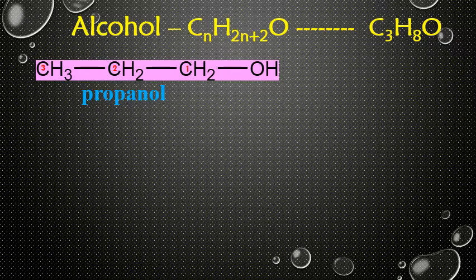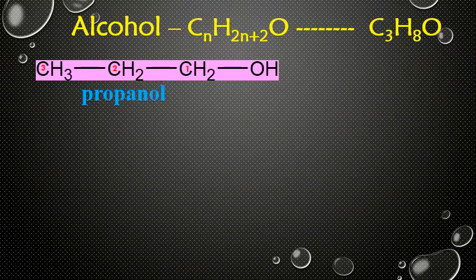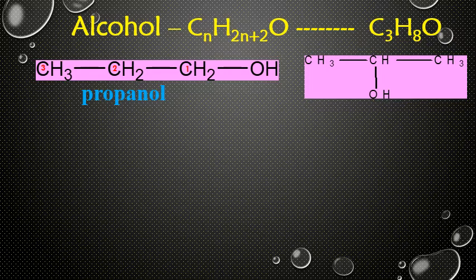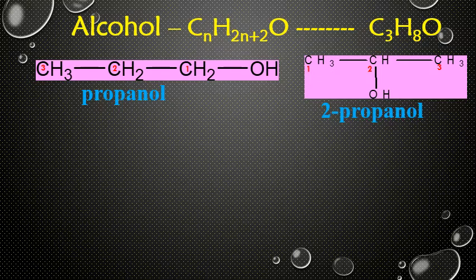When we draw a positional isomer for this structure, the length of the carbon chain should be fixed and the functional group should be drawn in another position. If we draw a structure where the carbon chain length is 3 but the OH group is attached to the second carbon atom, this structure is named 2-propanol. The first structure is a primary alcohol while the second one is a secondary alcohol.